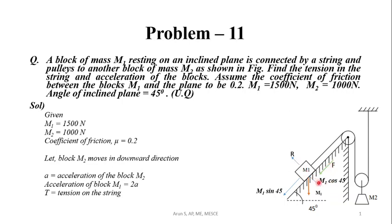Perpendicular to plane forces: R minus M1 cos 45 equals zero. That is, R equals M1 cos 45. Friction force is μ into R.